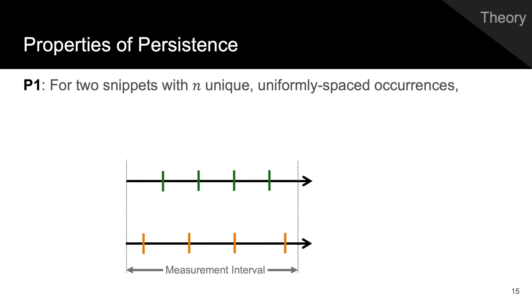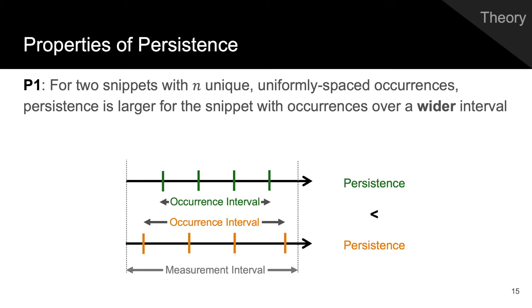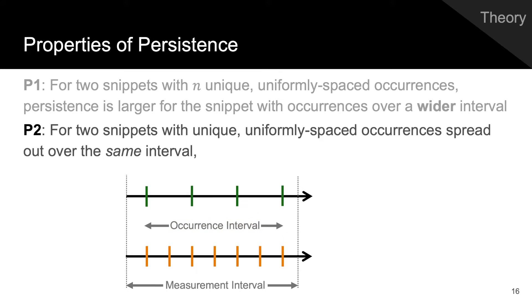First of all, if two snippets each have n unique occurrences that are uniformly spaced out, but the second snippet has occurrences spread over a wider interval, then that snippet ought to have higher persistence. If two snippets have unique uniformly spaced occurrences spread over the same interval, but the second snippet has more occurrences, then it ought to have higher persistence.